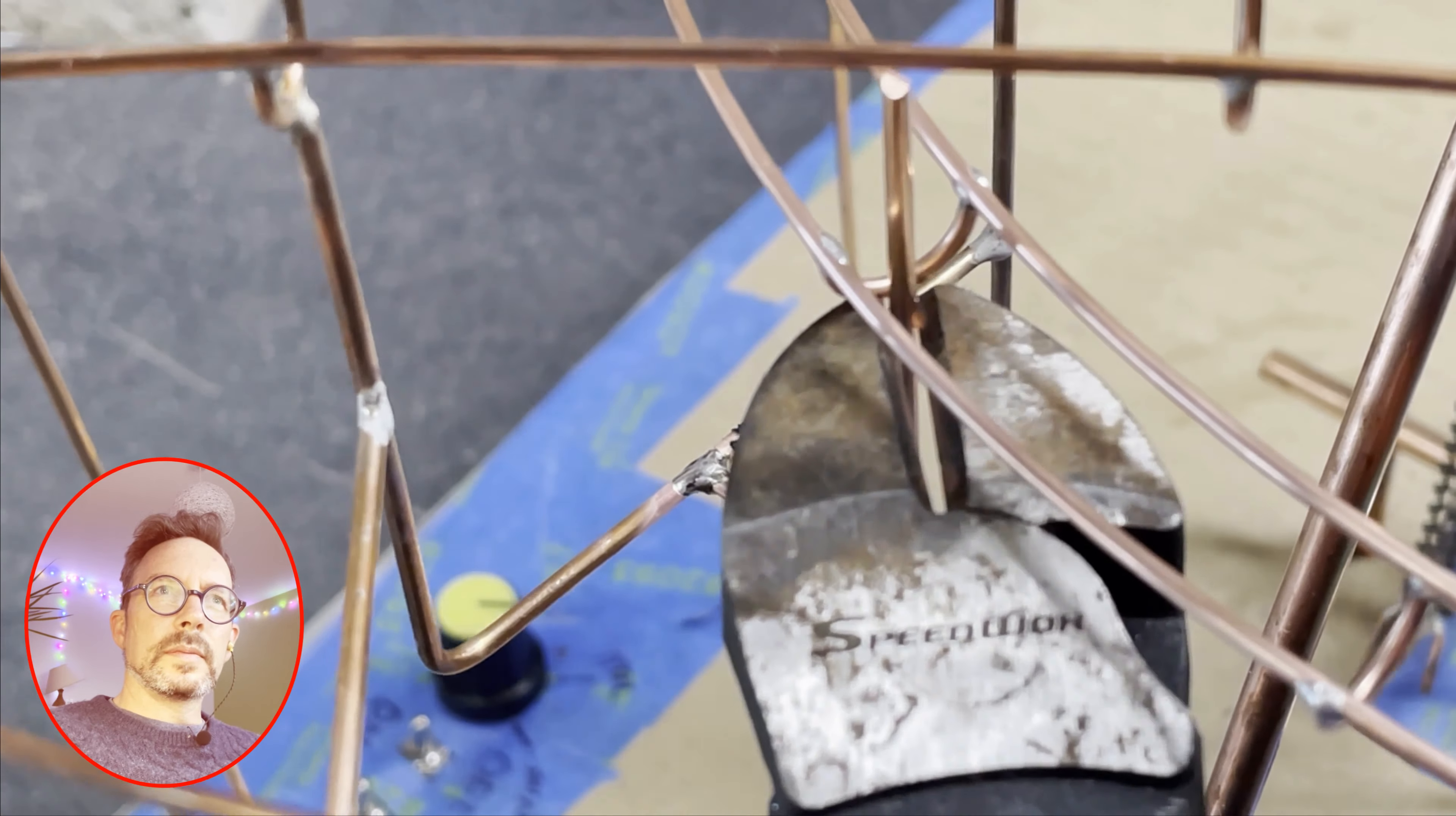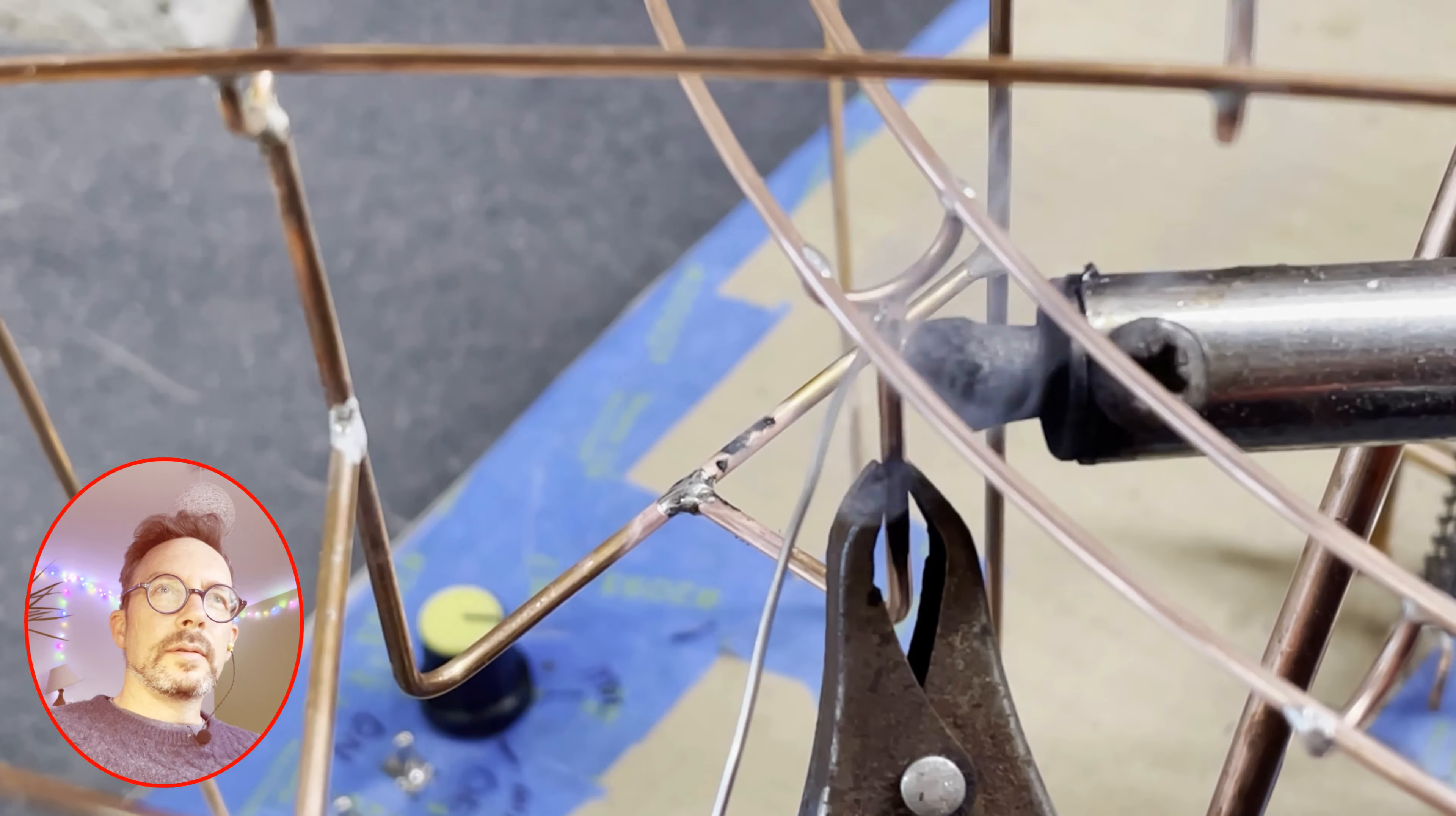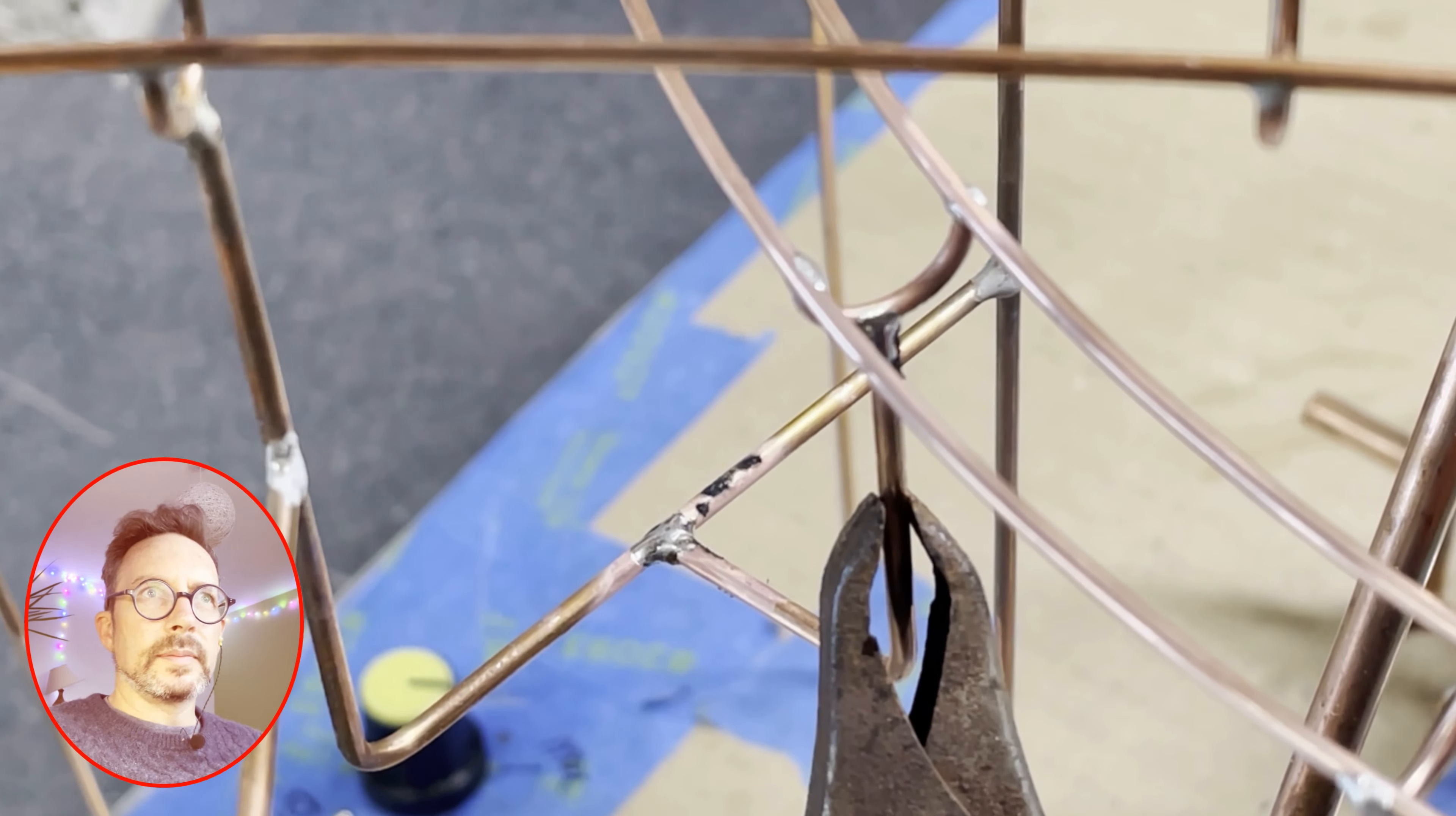Snip. Flux. Heat. Solder. On the top and the bottom. It's a little bit offset. Bend it back with the pliers. There we go.